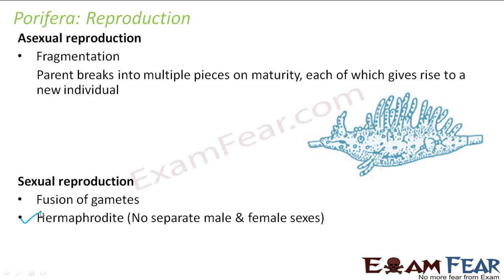Porifera do not have distinct organs — no stomach, no kidneys. All basic body functions like digestion, ingestion, and excretion are performed by the canal system. There are also no muscle cells, which is why Porifera are immobile and cannot move from one place to another. Porifera are an exception to the general rule that animals are mobile. Regarding fertilization, it is internal — the fusion of gametes takes place inside the body of the Porifera.